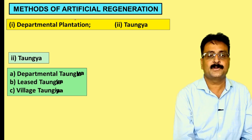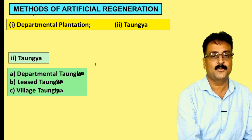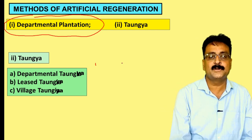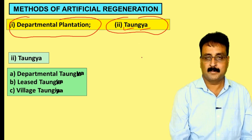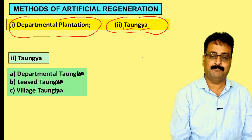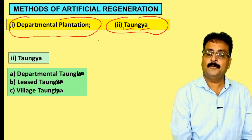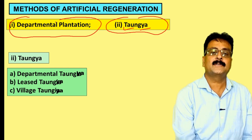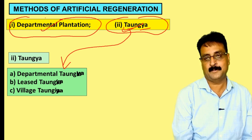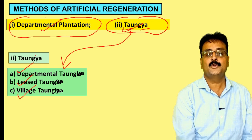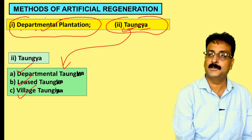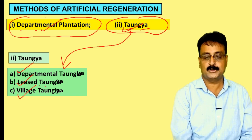There are two methods of artificial regeneration: departmental plantation and taungya. Taungya is a Burmese word meaning hill cultivation — 'tong' means hill, 'ya' means cultivation. Taungya was introduced by Brandis. Taungya is further classified into three sub-heads: departmental taungya, leased taungya, and village taungya. We should not confuse departmental plantation with departmental taungya — they are different.